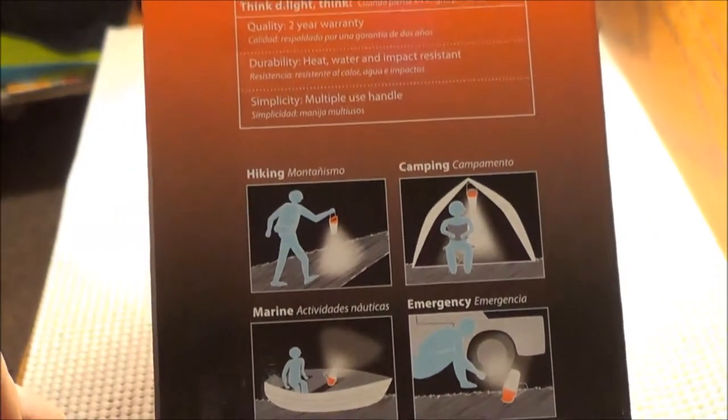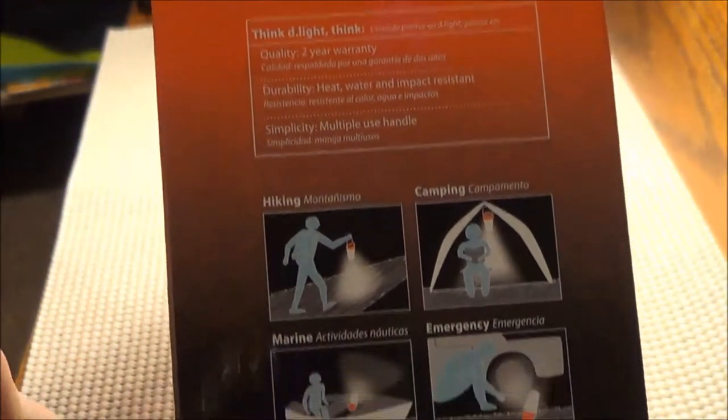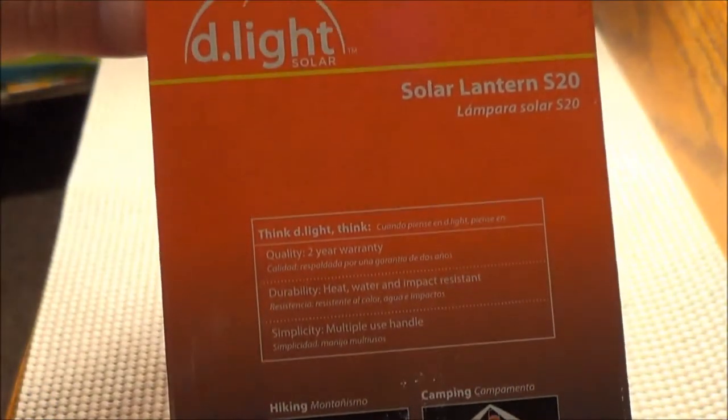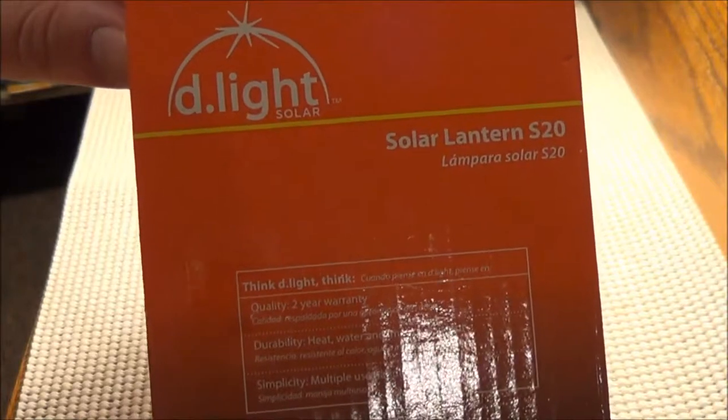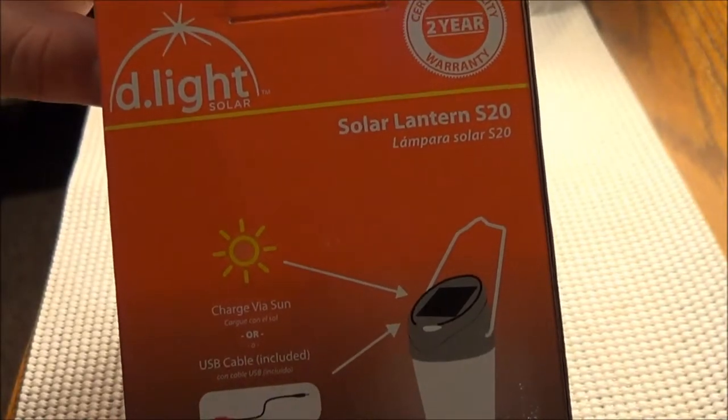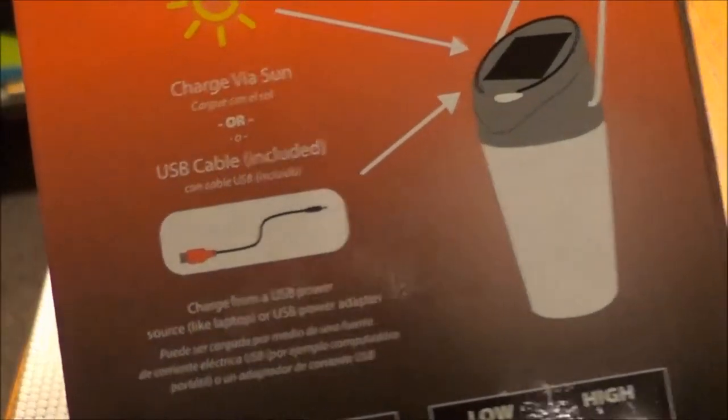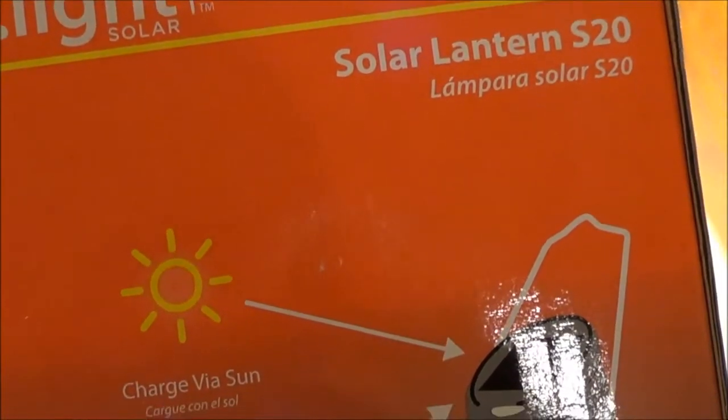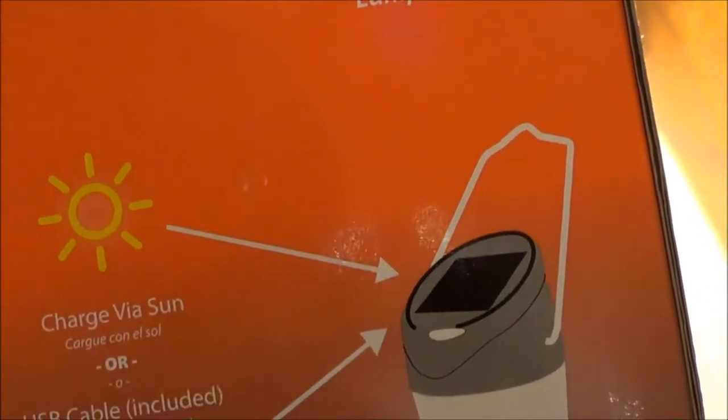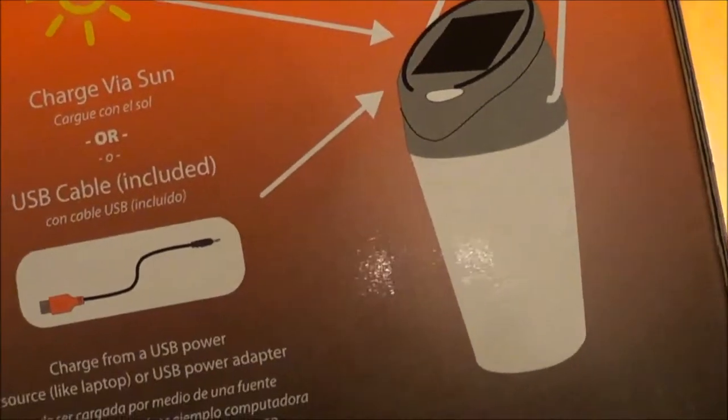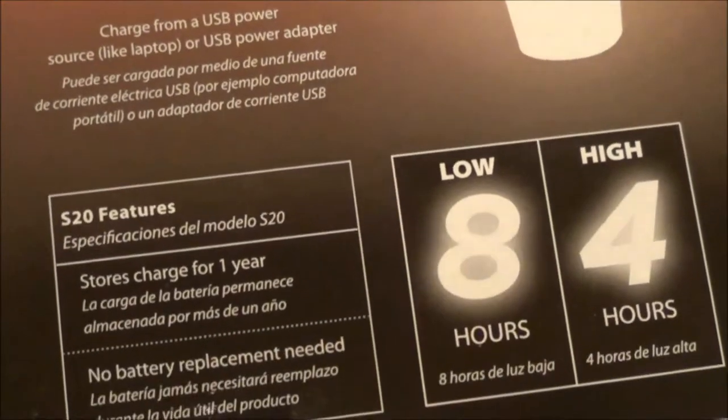You can kind of see the diagram here using it for different applications. Of course I'm using it just for a prepping item and it also comes with a USB charger and I'll show you that in a moment. It has a little solar panel on the top and a nice little handle there that you can hang it in different positions.